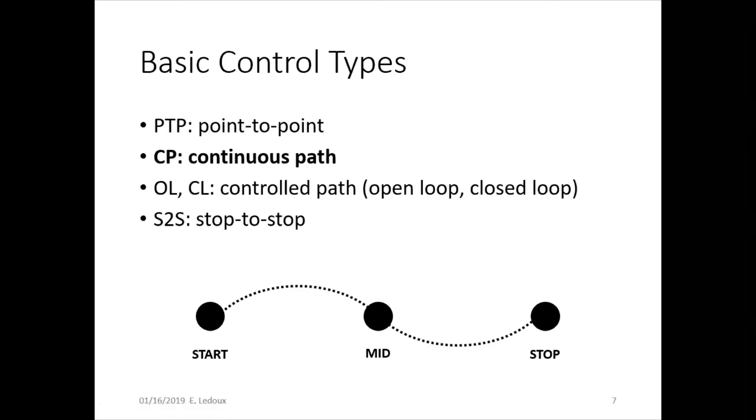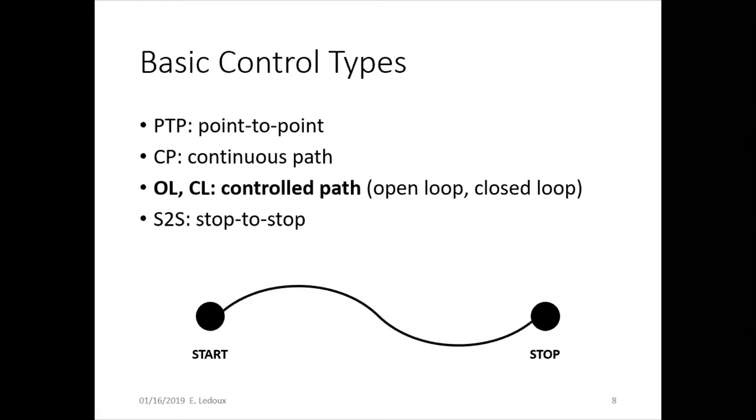Now point-to-point and continuous path can both be open loop. But a controlled path is where the robot doesn't necessarily go to individual points, but its whole path is maybe a function of time or position. Think of it like an integral as opposed to a Riemann sum. Closed loop is when there are sensors in the environment that provide feedback, whereas open loop has no sensors.